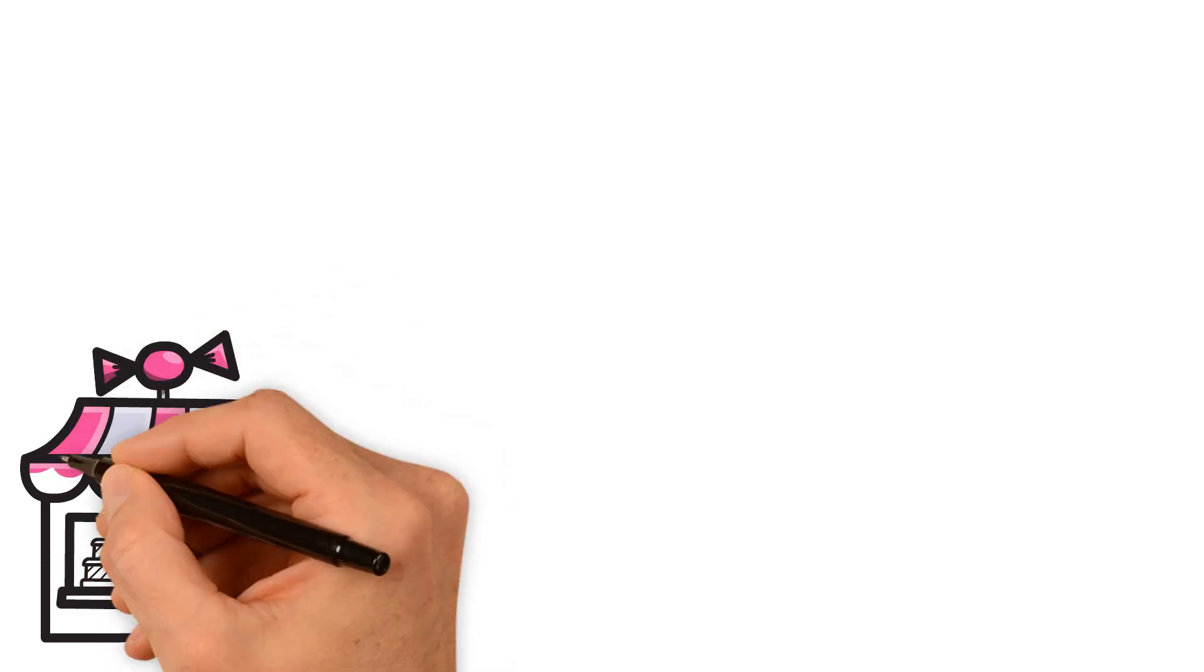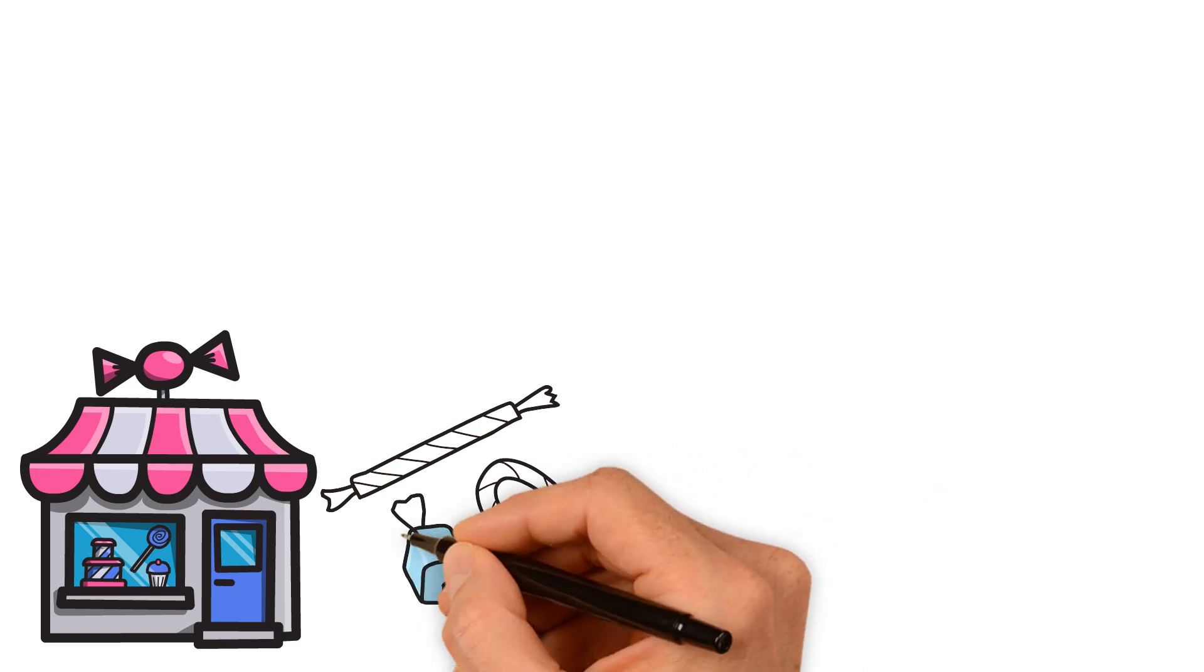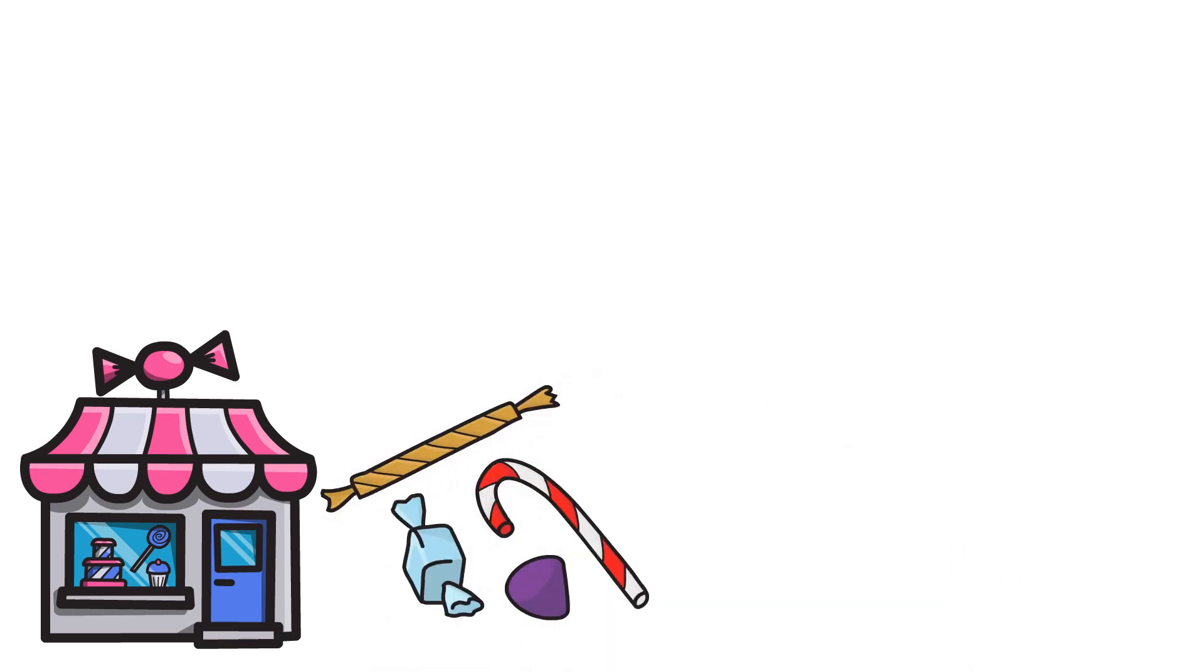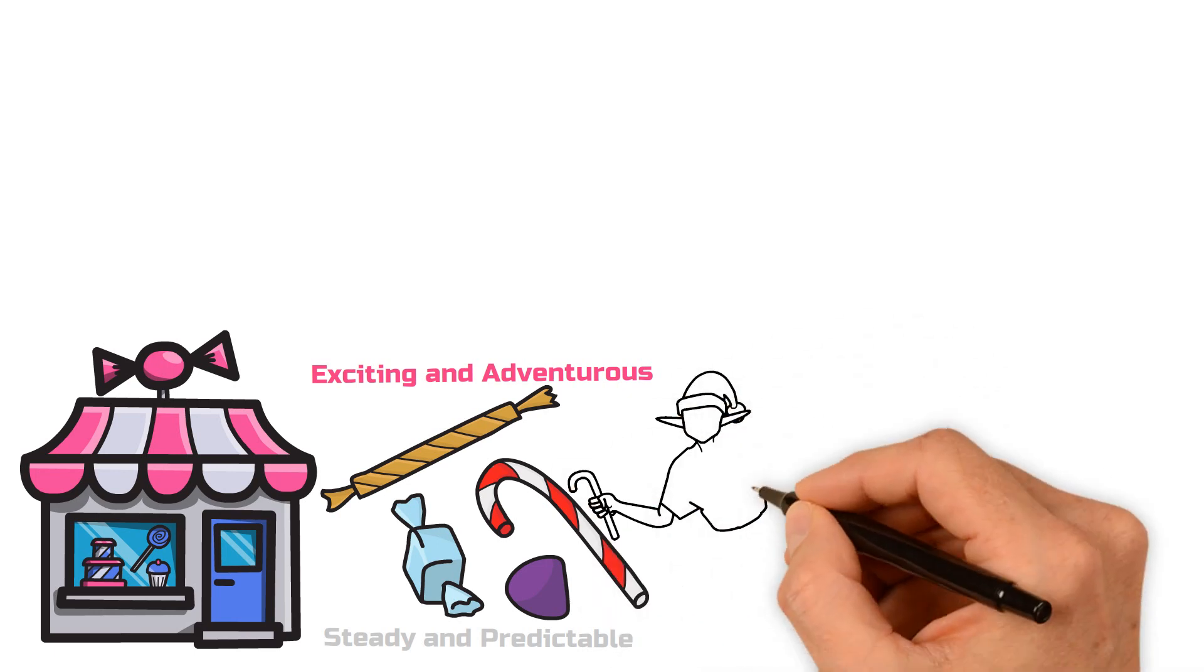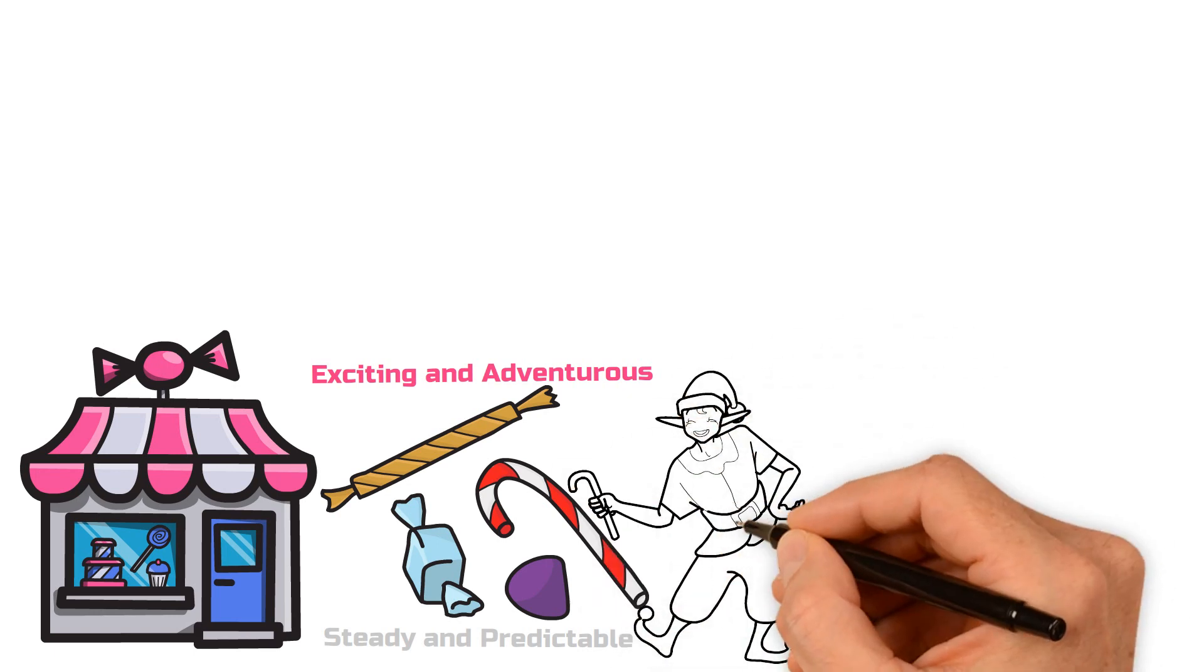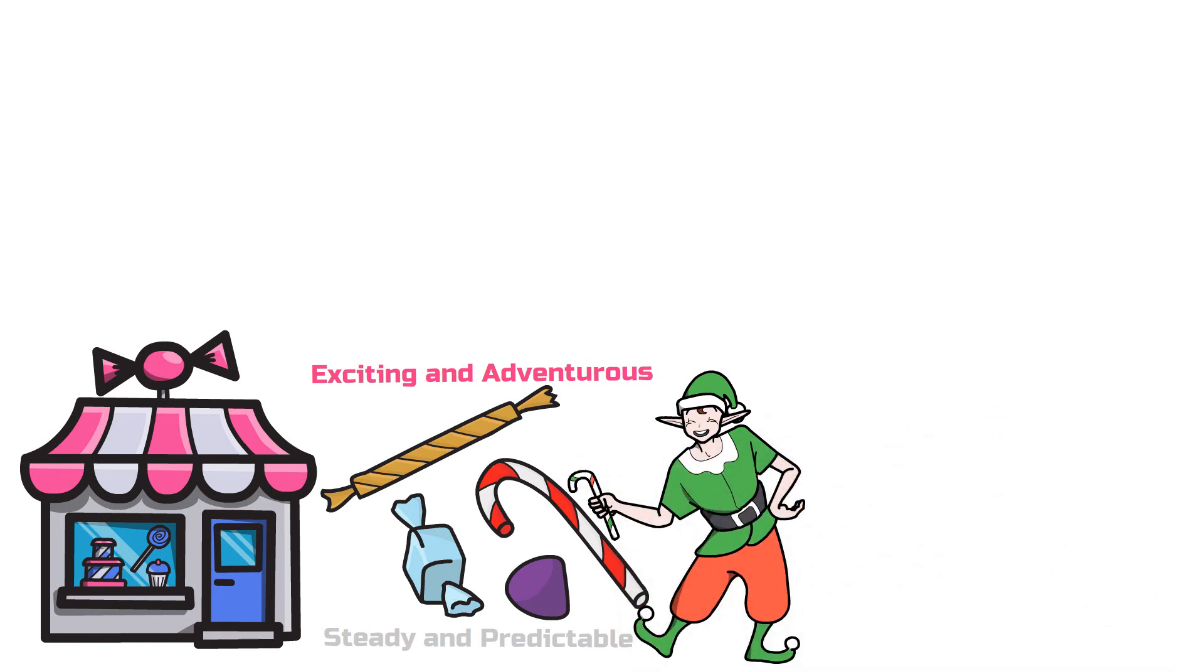Alright, let's assume you're in a candy store, and you have to pick your favorite treats. Each candy represents a different investment, from the exciting and adventurous to the more steady and predictable. Now, here's the deal: not all candies, or investments, are the same. Some are super sweet but might give you a sugar rush, while others are more balanced and won't lead to a sugar crash. It's the same with assets.